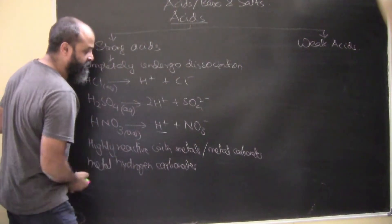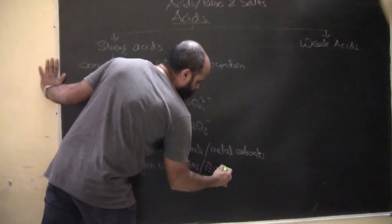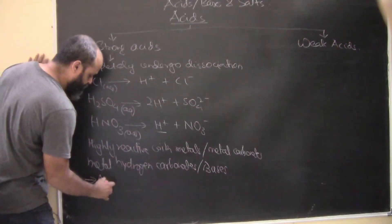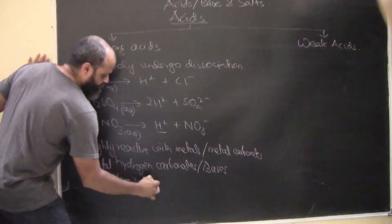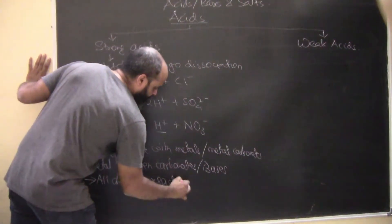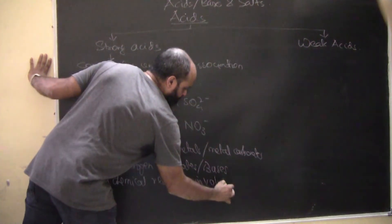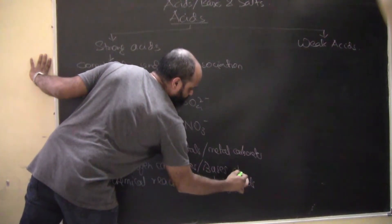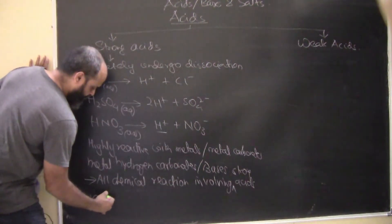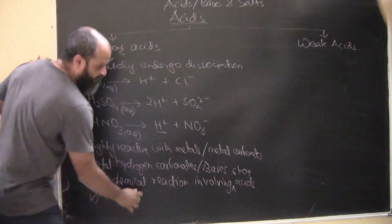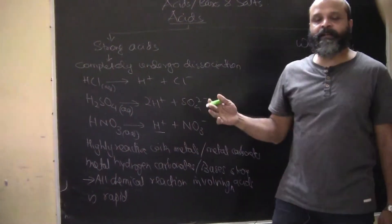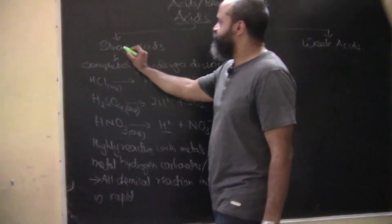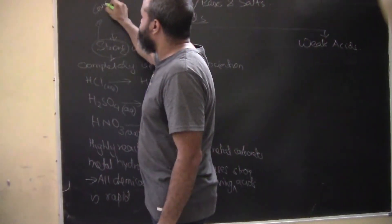With metals, metal carbonates, metal hydrogen carbonates, and bases - all these chemical reactions involving strong acids are rapid. Rapid means it doesn't consume time; it is a rapid reaction taking place.